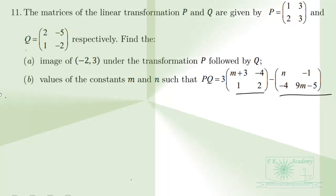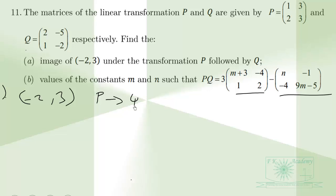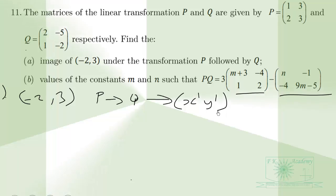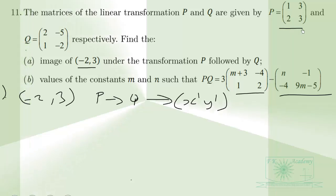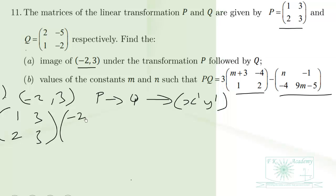For part A, the point (-2, 3) is transformed under P followed by Q to get the result (x', y'). We are looking for x' and y'. When we transform this point under P, we compute P × [-2, 3], that is [[1, 3], [2, 3]] multiplied by the column vector [-2, 3].